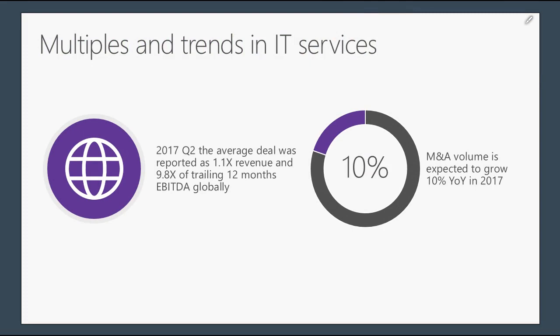Some brand new data from Q2 2017: average deal multiples in IT services globally are at about 1.1 times revenue and 9.8 times trailing 12-month EBITDA. I would caution you not to read too much into this because it includes all deals, including large deals where there's a public company multiple lift, and it's weighted by dollar volume. Typically, we see deals for smaller companies — those under $50 million in revenue — trading at around seven to eight times trailing EBITDA. 2017 numbers are currently exceeding a 10% year-over-year trajectory from a growth perspective.